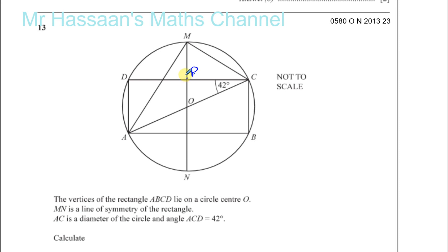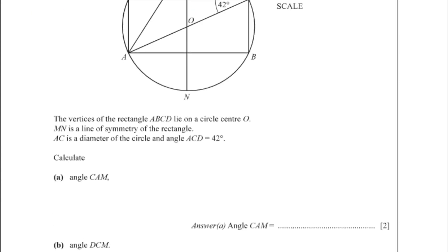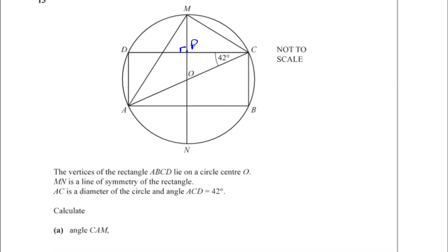AC is the diameter of the circle — it passes through the center and is also the diagonal of the rectangle. Angle ACD is 42 degrees. Now we're asked to find two things: angle CAM and angle DCM. Let's start with angle CAM.